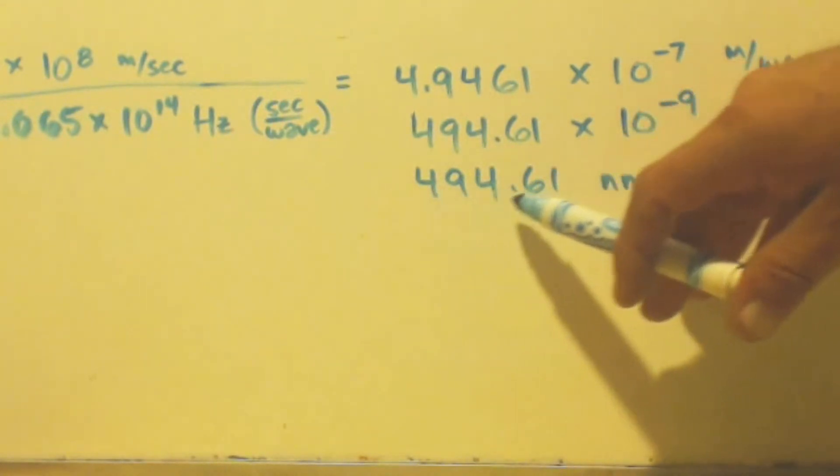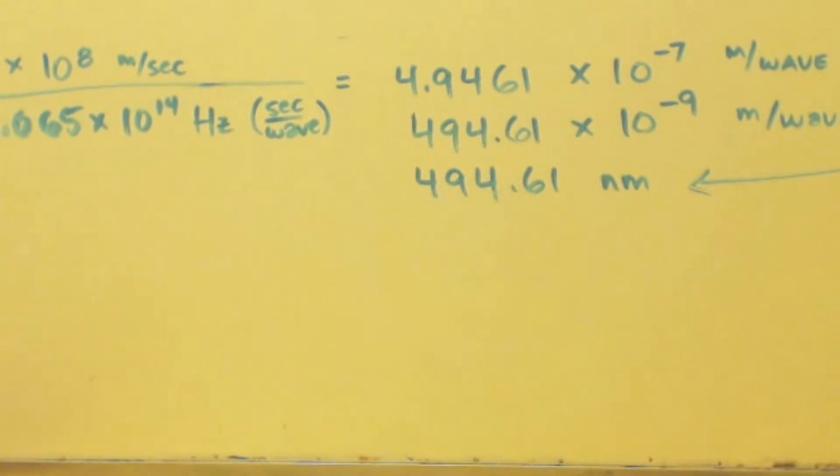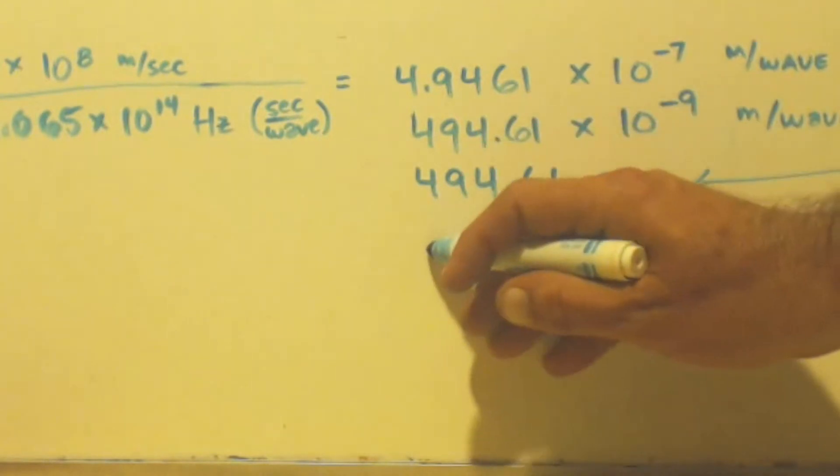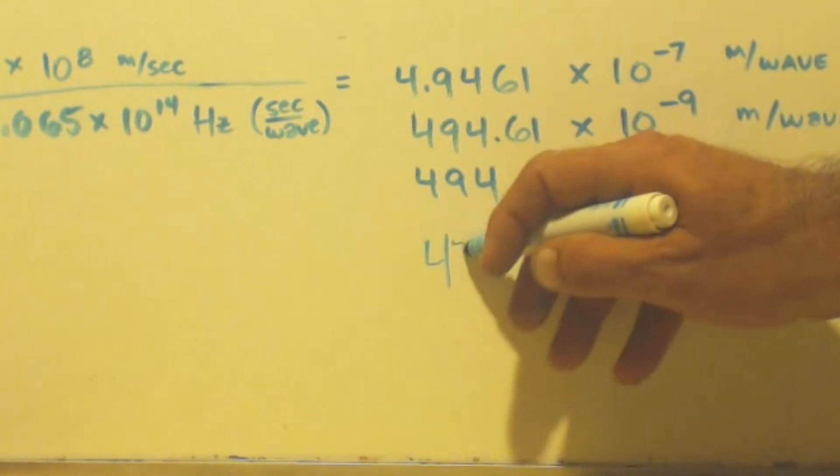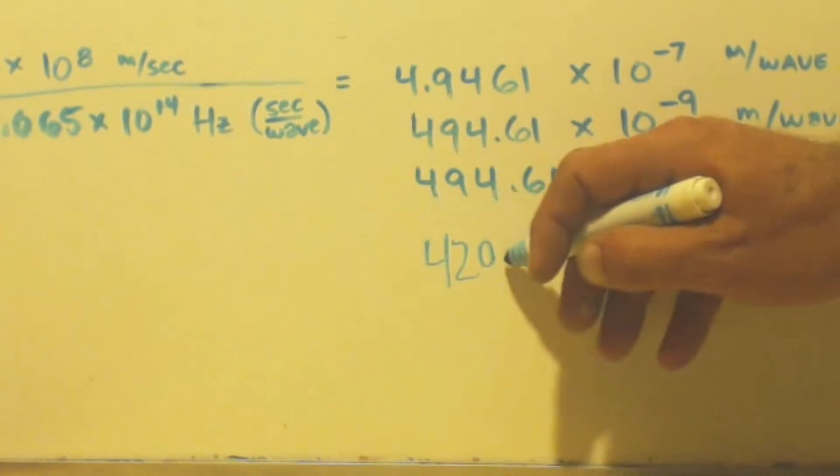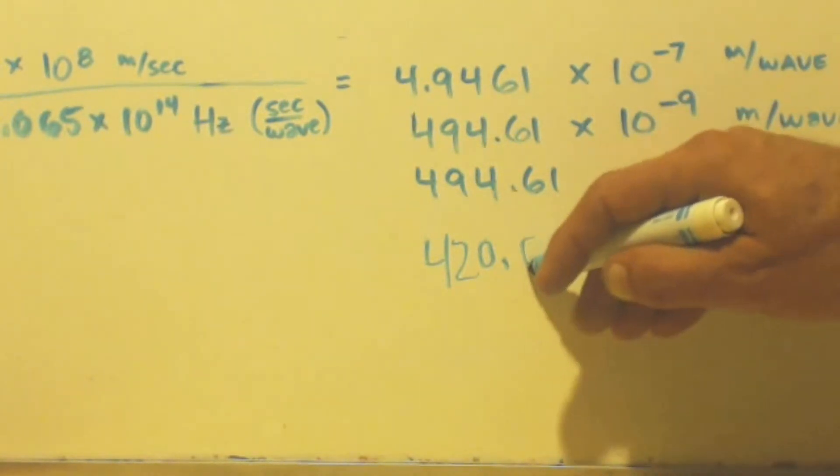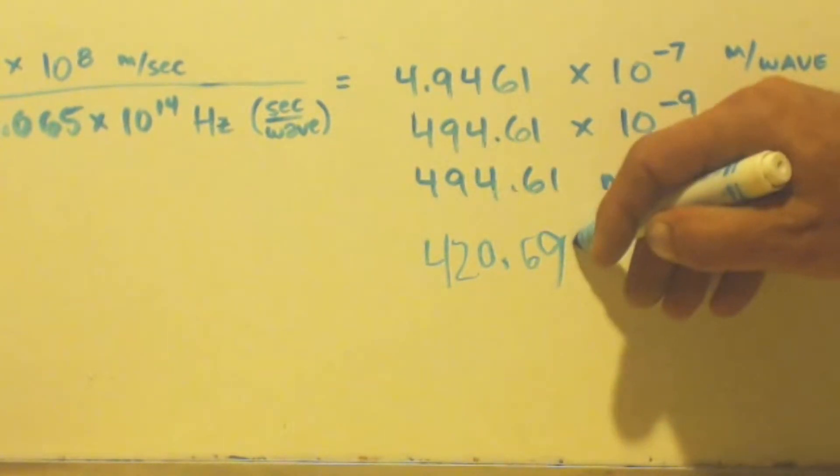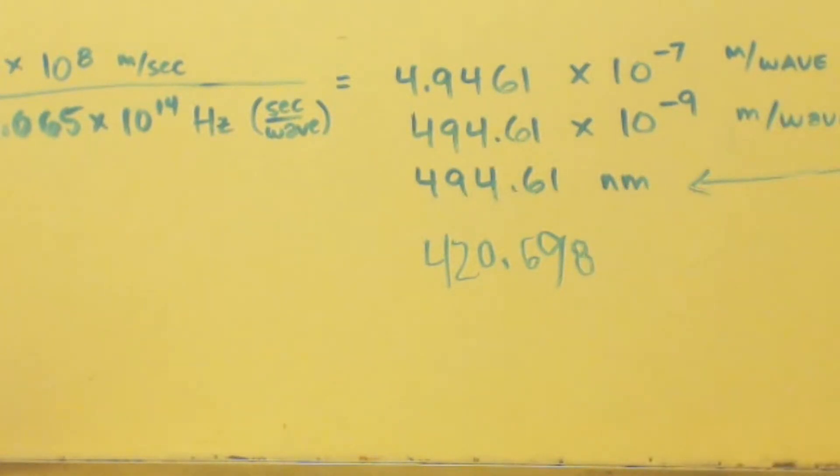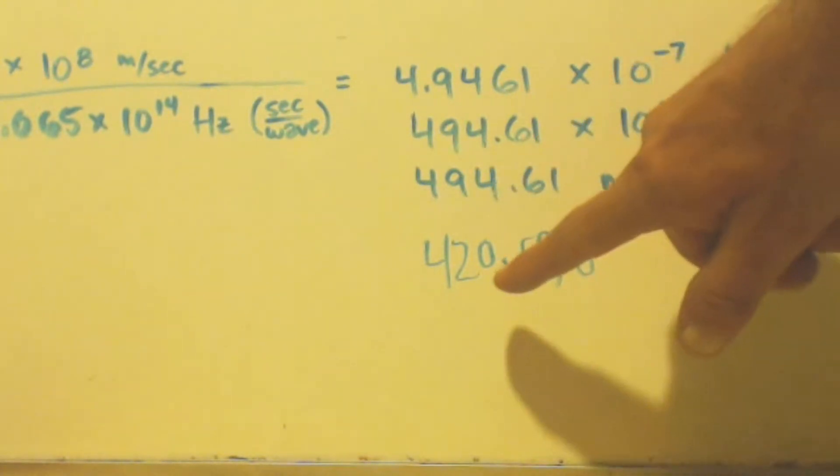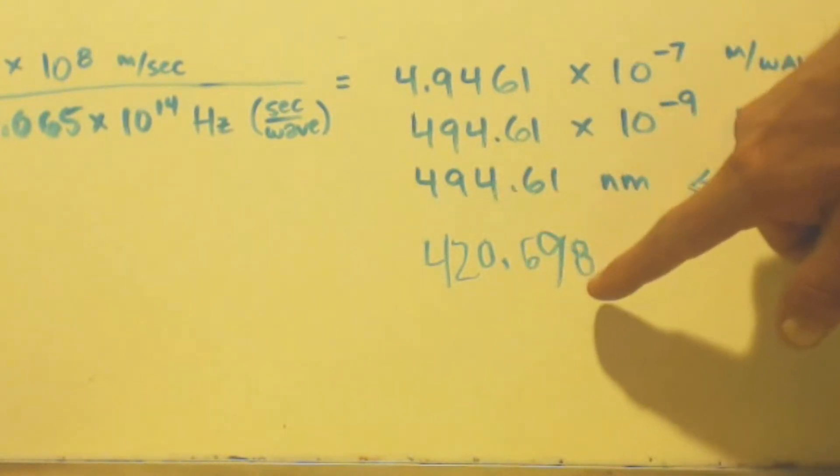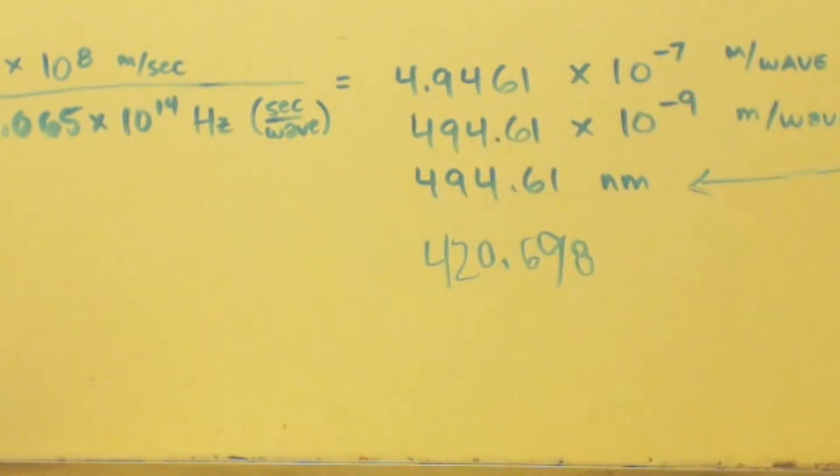We want somewhere between 421 and remember we said this was how much it takes exactly to break the chlorine bond. Let's put 420.698 here.